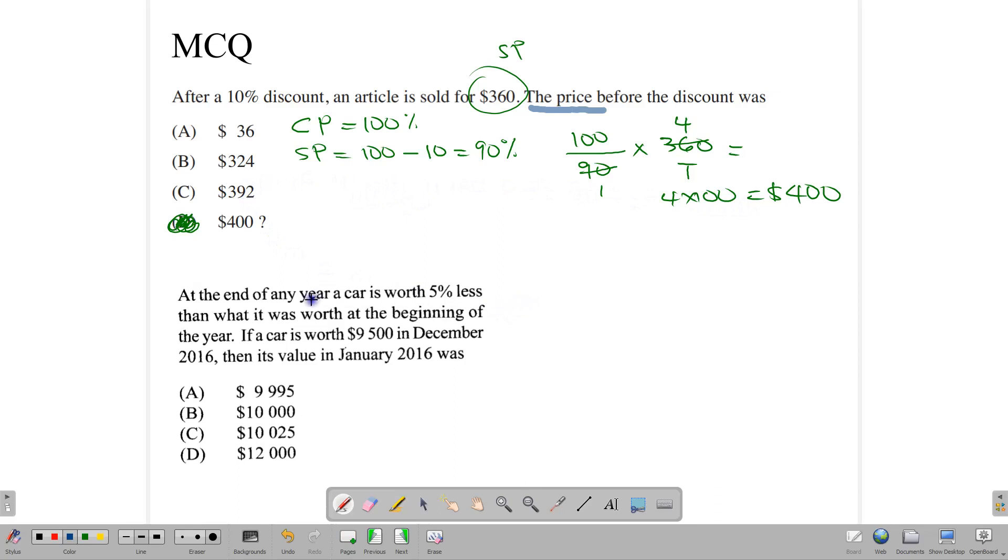Let's look at the last one here. At the end of any year, a car is worth 5% less than what it was worth at the beginning of the year. If the car is worth $9,500 in December 2016, what was its value in January 2016? Again, these answers are supposed to be tricky. But if you work it out correctly, then you won't have a problem. So let's go. The car is worth 5% less. So the initial cost price of the car at the beginning of the year was 100%. The selling price, using the same model, at the end of the year is going to be decreased by 5%, which means that the value of the car is valued 95% of what it used to value.